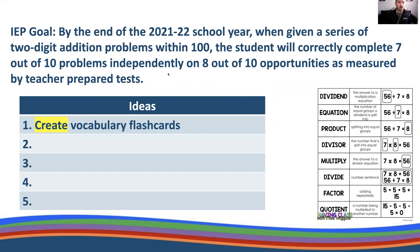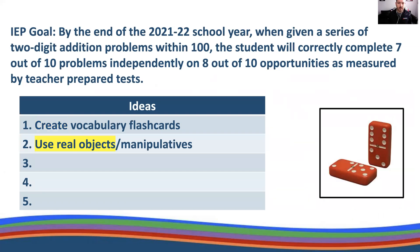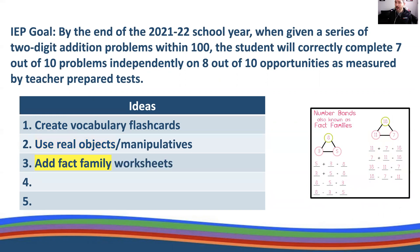The IEP goal involves a series of two-digit problems within 100. One idea is to create vocabulary flashcards, providing visuals and practice before the student begins the work. Using real objects or manipulatives makes it very concrete and hands-on. You might also add fact family worksheets as appropriate so the student engages with different concepts of math and different formations of numbers.